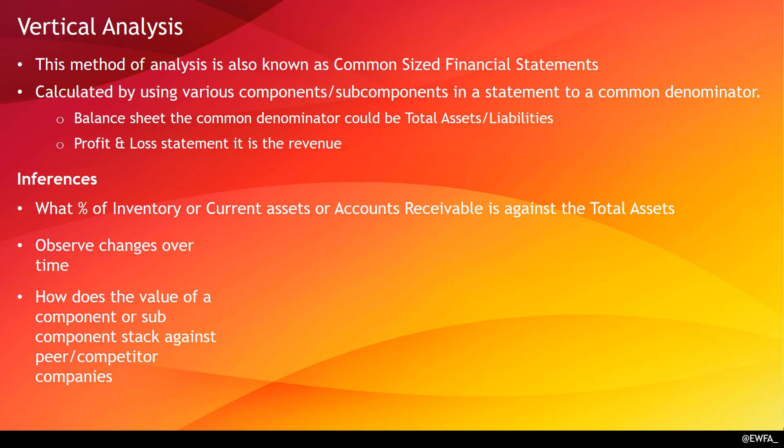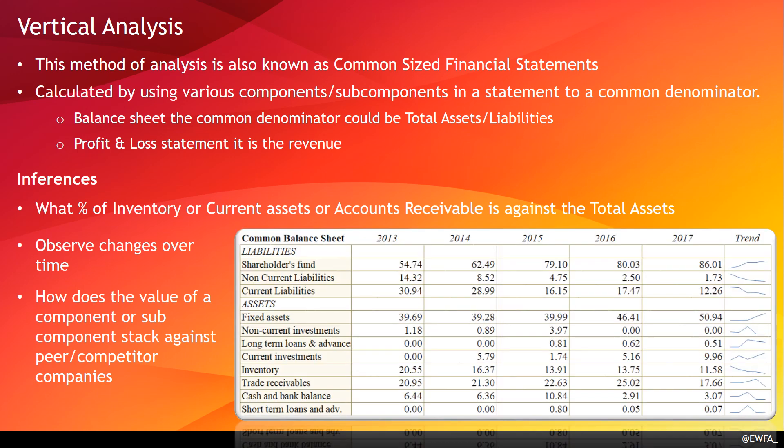In this real example, you can see that current liabilities have been steadily declining while fixed assets have been steadily increasing — all such inferences come out when you do vertical analysis.